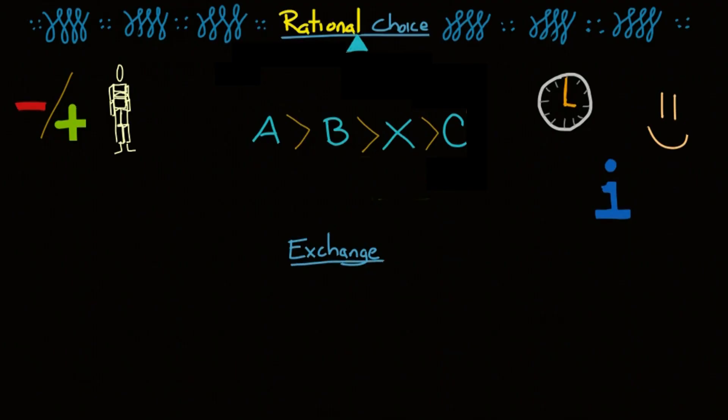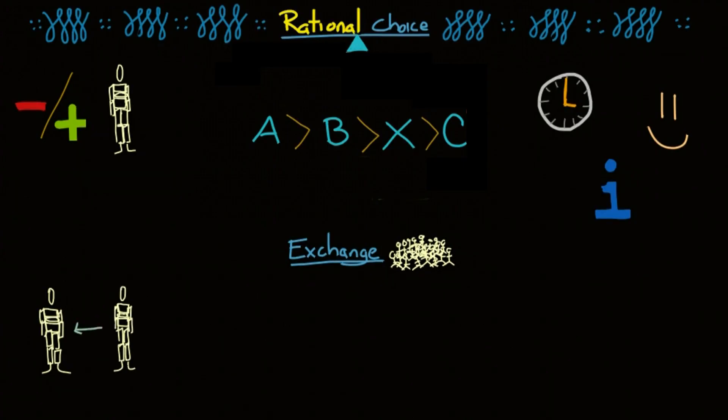Exchange theory is an application of rational choice theory to social interactions. It looks at society as a series of interactions between individuals, and is often used to study family relationships, work relationships, partner selection, parenting, and many other interpersonal interactions. These interactions are determined by weighing the rewards and punishments of every interaction.